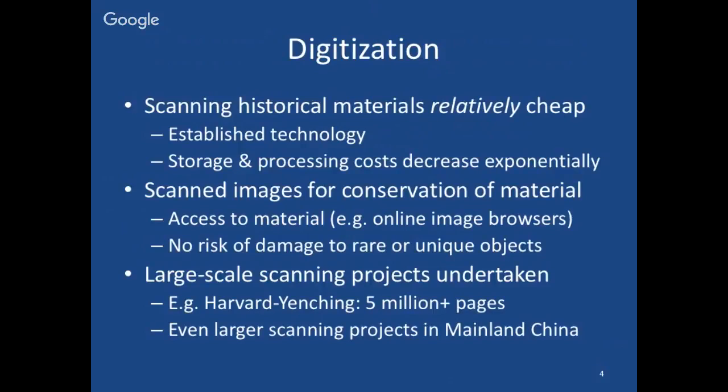Partly as a result of these factors, there are many large-scale scanning projects being undertaken. One I'm particularly familiar with is the Harvard Yenching Library Rare Books Project, where over 5 million pages of scanned primary source materials have been created using a high-quality digitization process. These are now all in ctext.org. But that's not even the largest scanning project — there are much larger ones ongoing in mainland China.